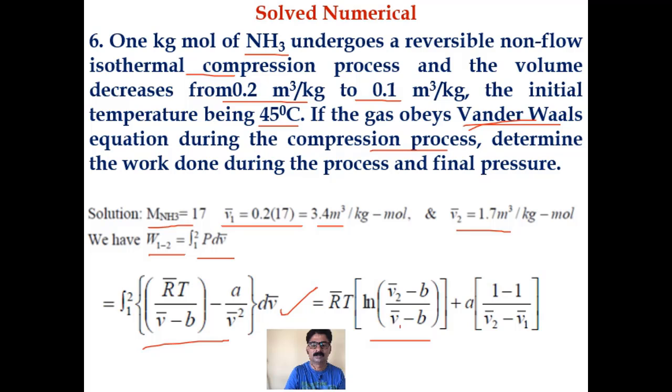Sorry for the mistakes in typing. It should be V1 bar minus b here, and the second term involves 1 by V2 bar minus 1 by V1 bar. Please correct it, because otherwise the expression becomes zero which is wrong.